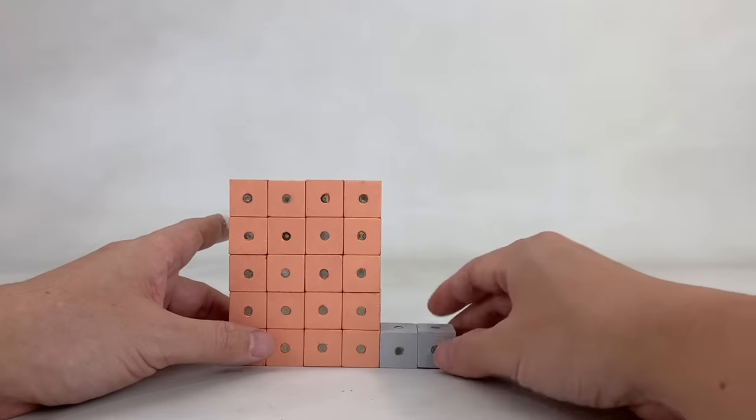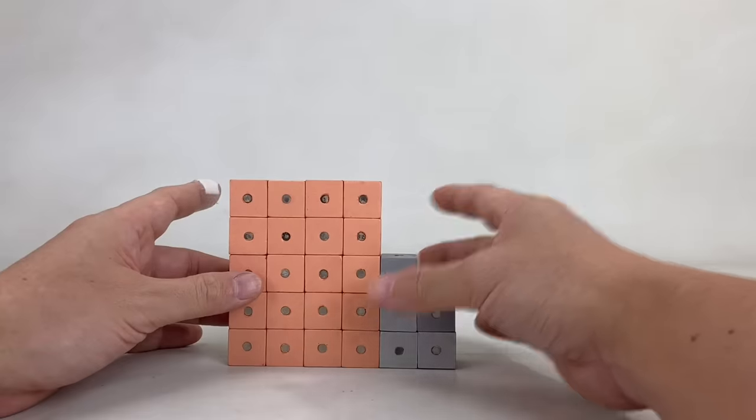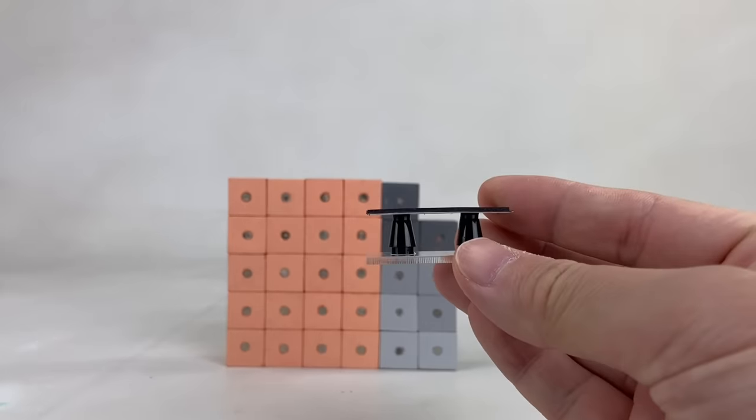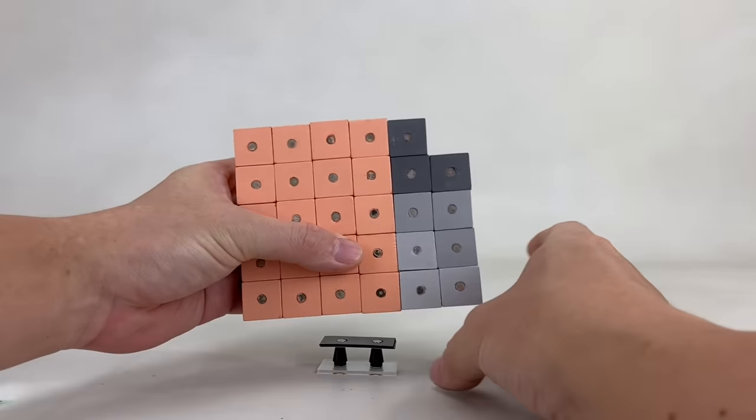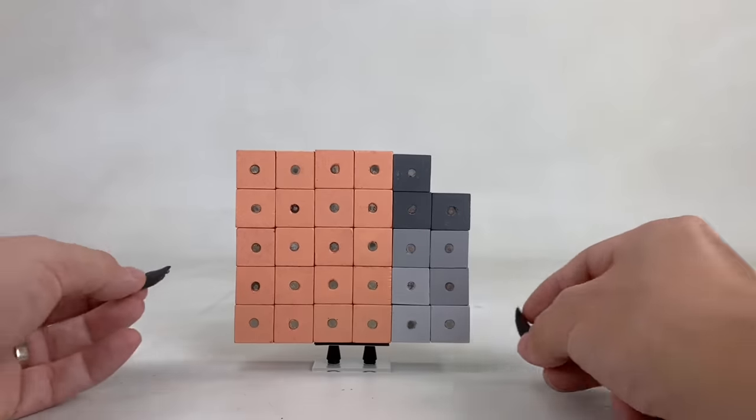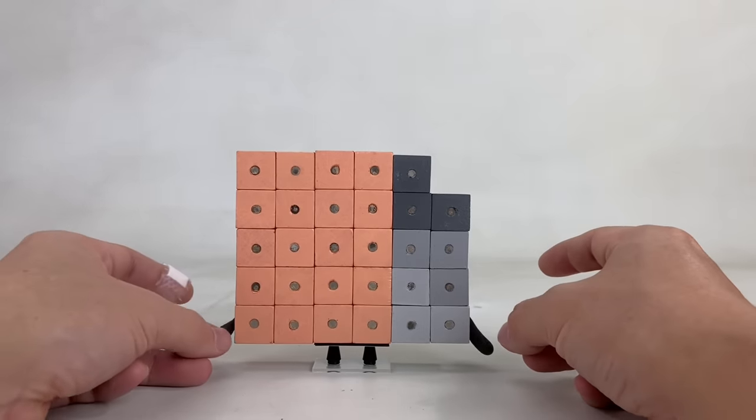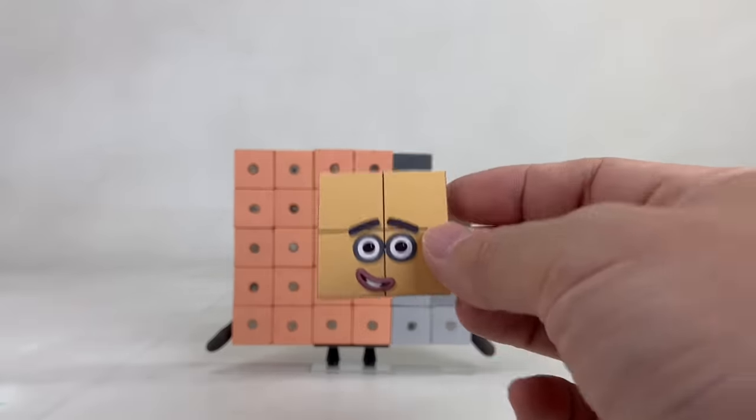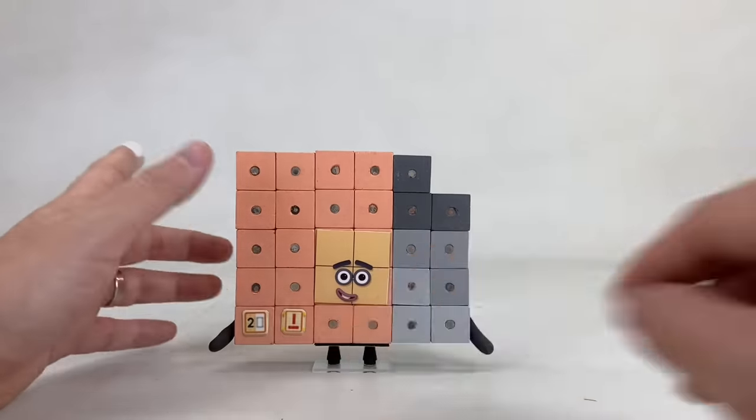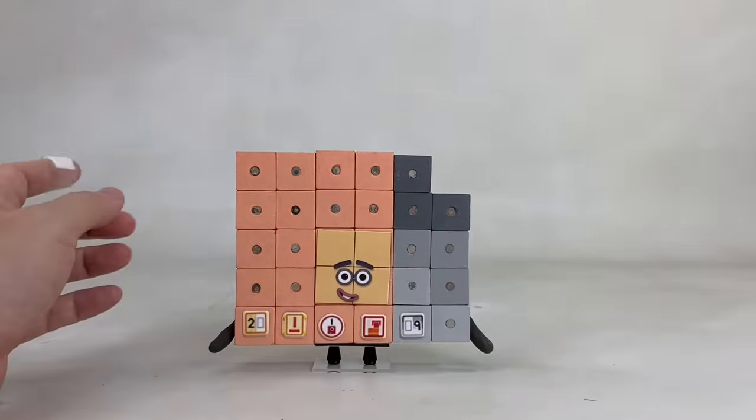We can also build him like this, 5 blocks tall by 6 blocks wide, with 1 block missing on the upper right. Here's his hand, arms, and face. Then his badges. And of course, his numberling.